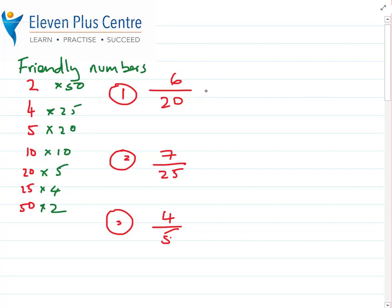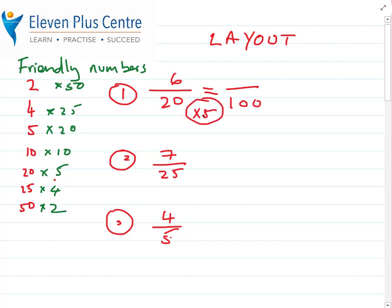Okay, so you've tried it. This is how you should do it. We lay it out — remember, layout is very important. What number turns 20 into 100? 20 times 5 makes 100 — that's my magic number. Whatever I do to the bottom I do the same to the top: 6 times 5 is 30. That's 30 percent. 30 out of 100 means 30 percent — we write it like this.